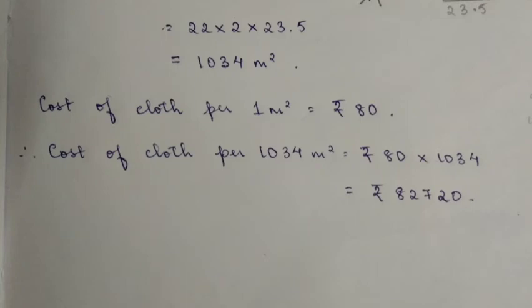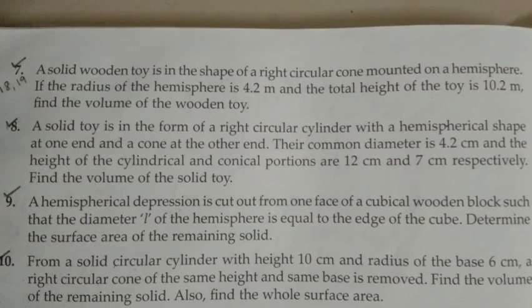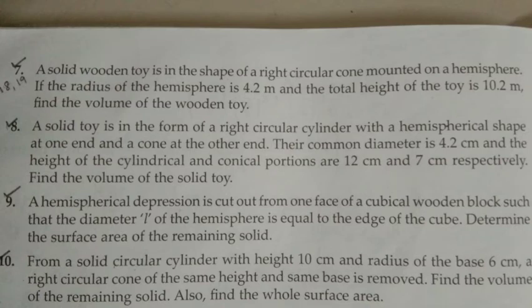Next is question number eight. A solid toy is in the form of a right circular cylinder with a hemispherical shape at one end and a cone at the other end. The common diameter is 4.2 centimeters. The height of the cylindrical and conical portions are 12 centimeters and 7 centimeters respectively.